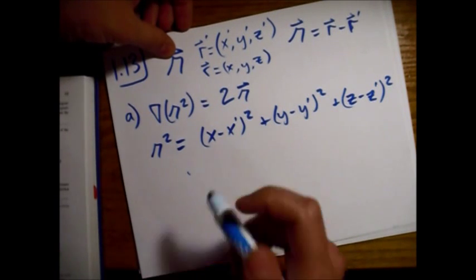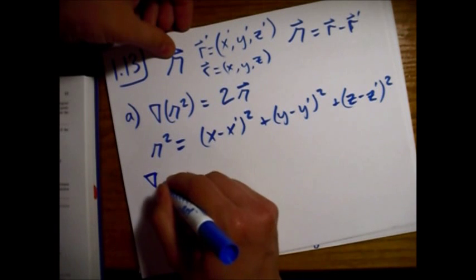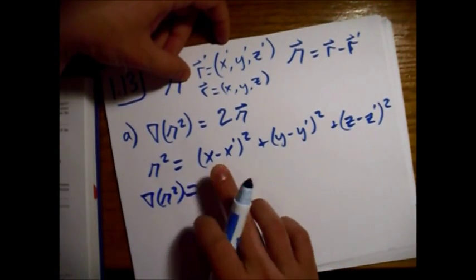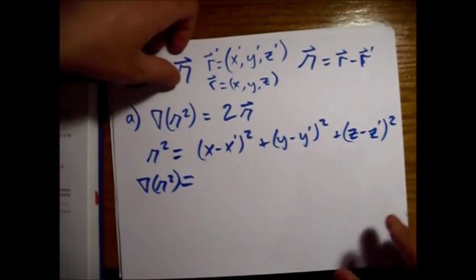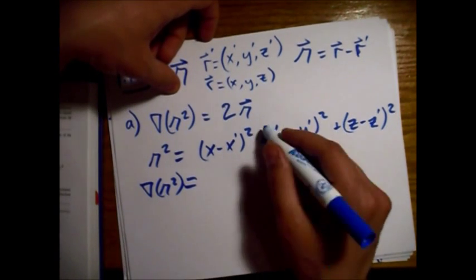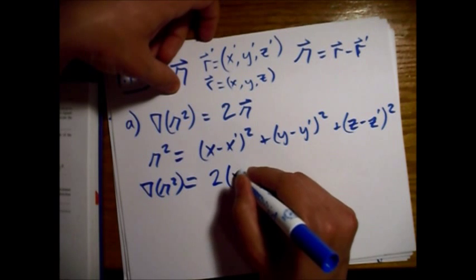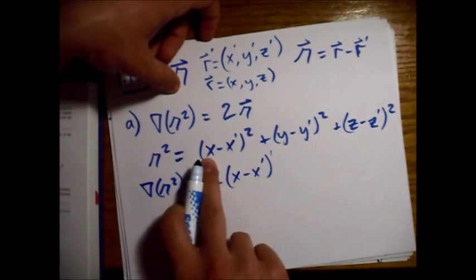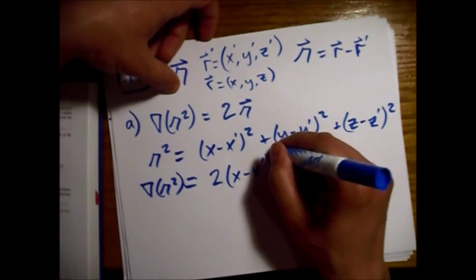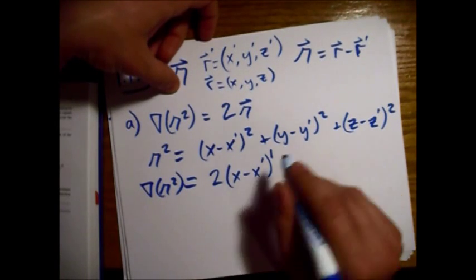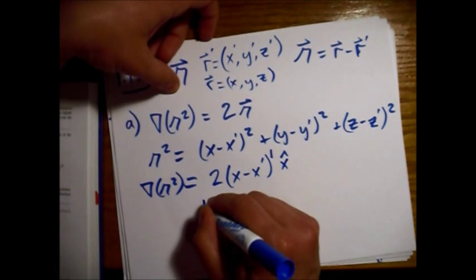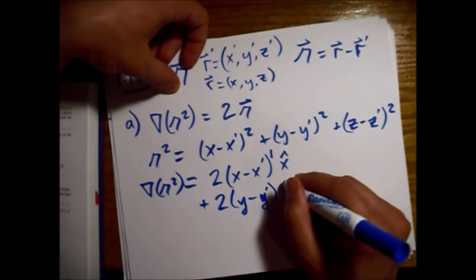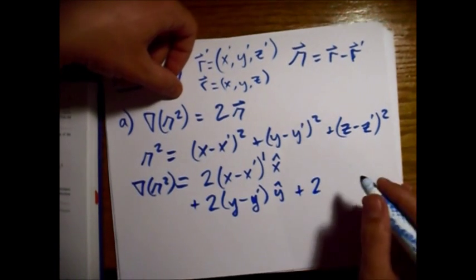Now we're just going to take the gradient of this. Taking the derivative with respect to x — the field point coordinate, not the primed one — using the chain rule we get 2 times (x minus x-prime) in the x-hat direction. There's nothing special about the x coordinate here, so we get the same thing for y and z.